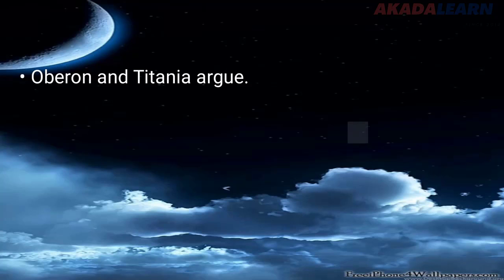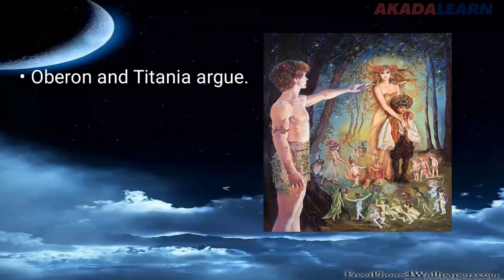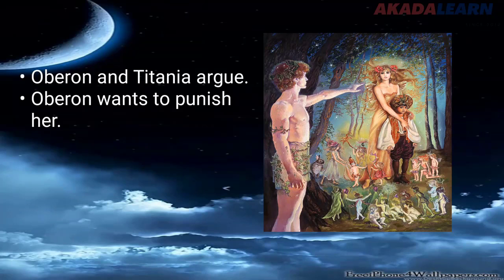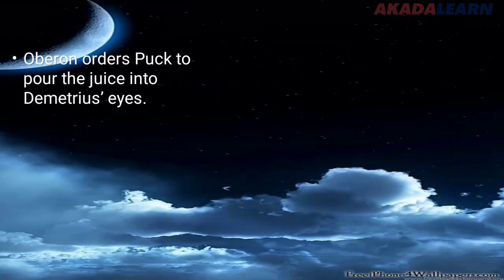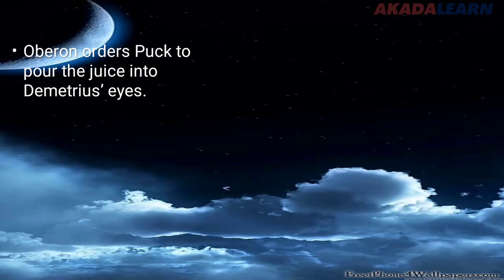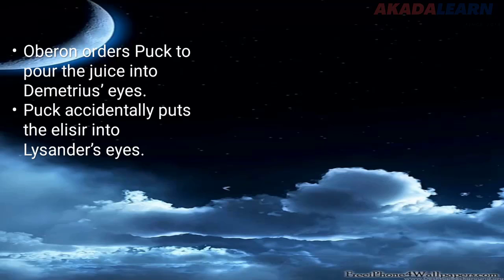In the woods, we see the fairies — Oberon and Titania are arguing. Oberon believes Titania has overstepped her boundaries as queen of the fairies and wants to punish her. So he asks Puck's help to make Titania fall in love with an ugly creature using a magical juice. Oberon also orders Puck to pour the juice into Demetrius's eyes, but Puck accidentally puts the elixir into Lysander's eyes instead.